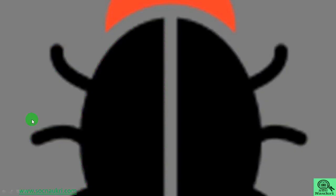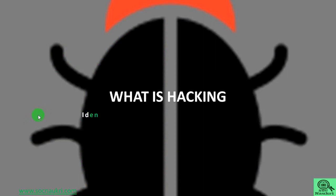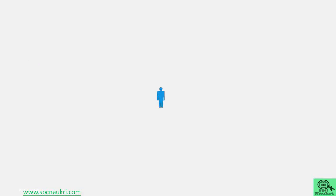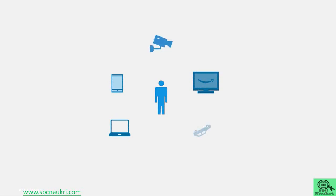So now, let's begin with: what is hacking? Hacking is identifying the flaw in the code and exploiting the weakness in the design — or, identifying the flaw in the code and changing its behavior to some other action by exploiting the weakness in the design of code. Take an example: we are all surrounded by digital devices like mobile phones, computers, CCTV cameras. Even today, cars and televisions are also coming with remote-controlling features and everything connected with the internet. But is it safe to use these electronic devices?